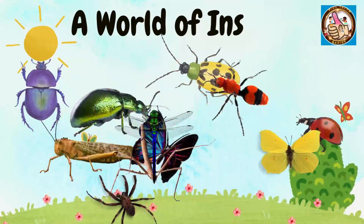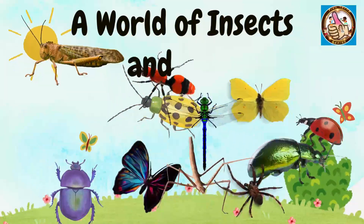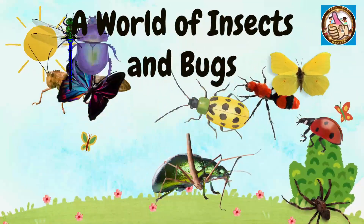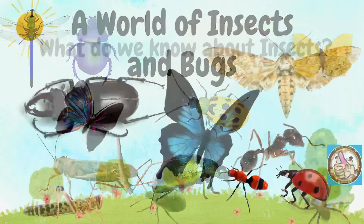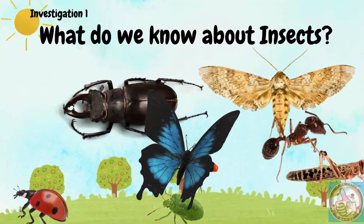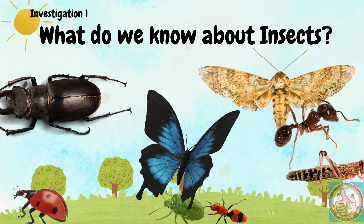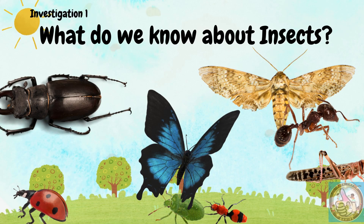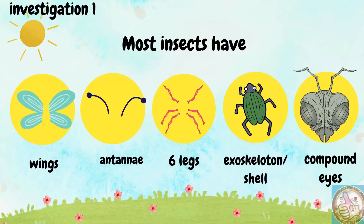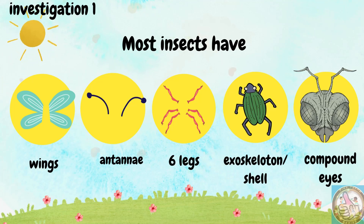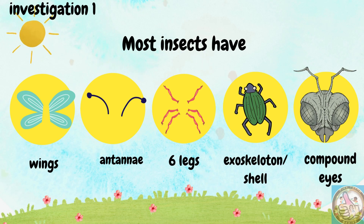A world of insects and bugs — what do we know about insects? Most insects have wings, antennae, six legs, an exoskeleton shell, and compound eyes.